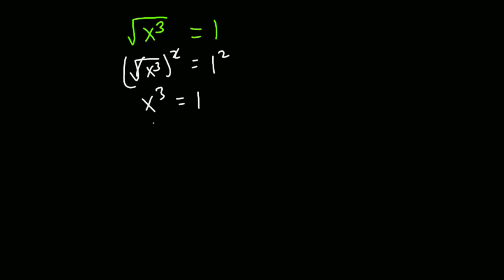Now this is where most people make the mistake. People just want to take the cubic root of both sides — the cubic root of 1 gives 1 — so they conclude x equals 1. This is partly true, but it is not the only answer. Generally, the exponent of the variable determines the number of values we must get. If the exponent of x is 3, we must get 3 values of x.